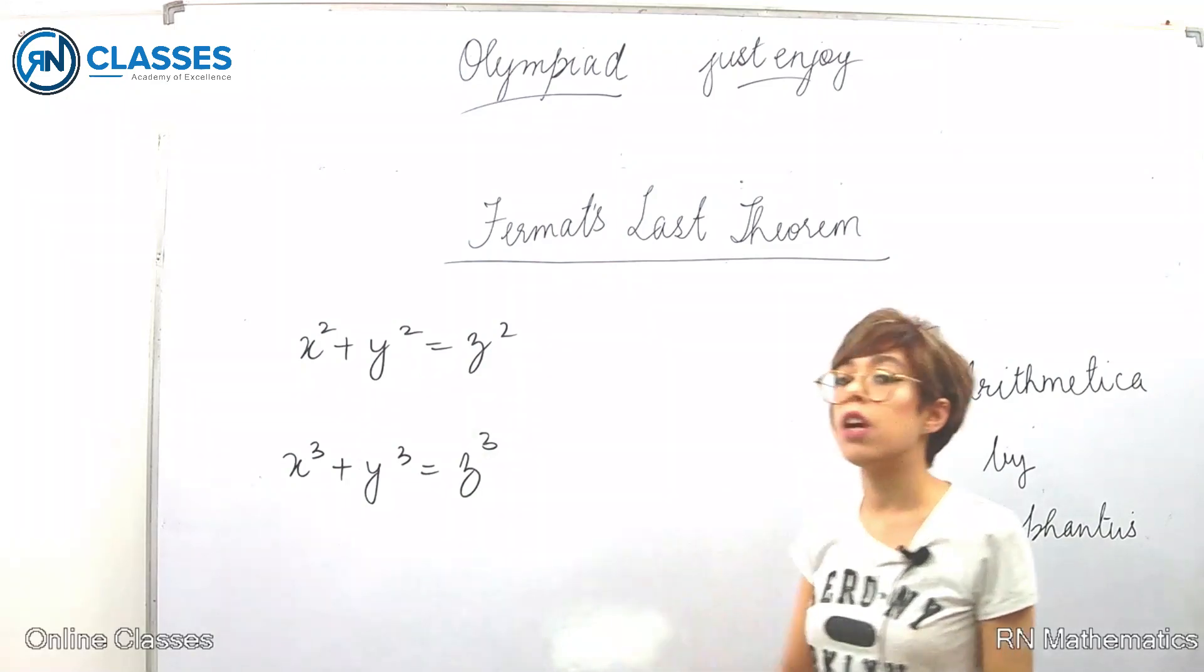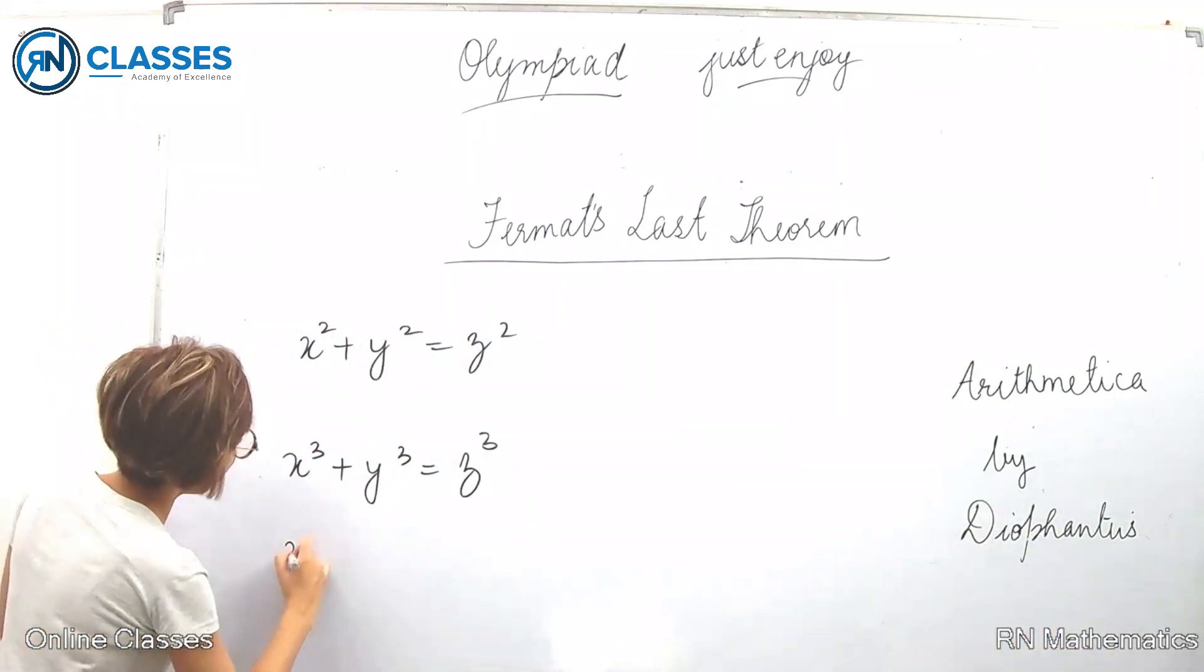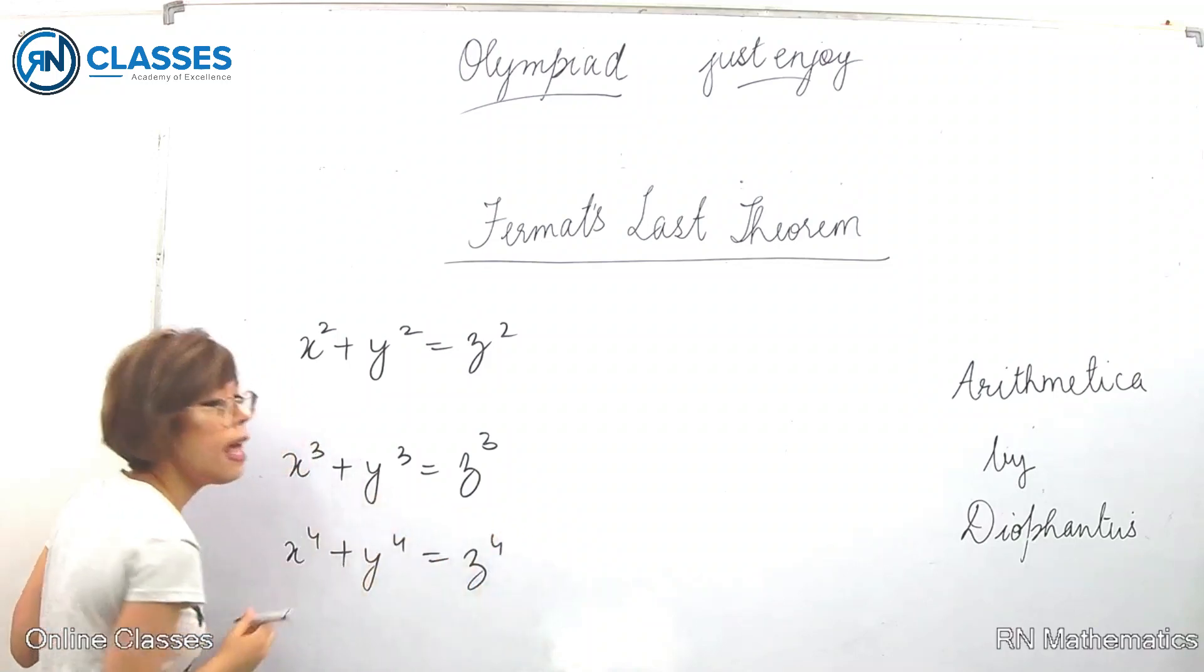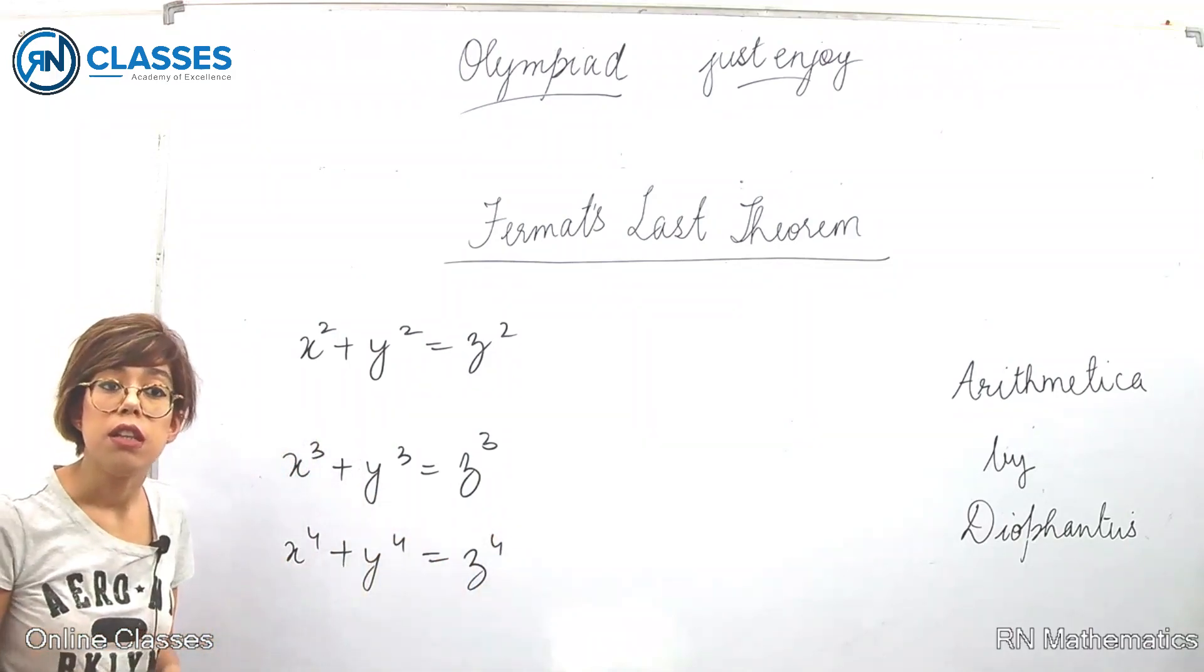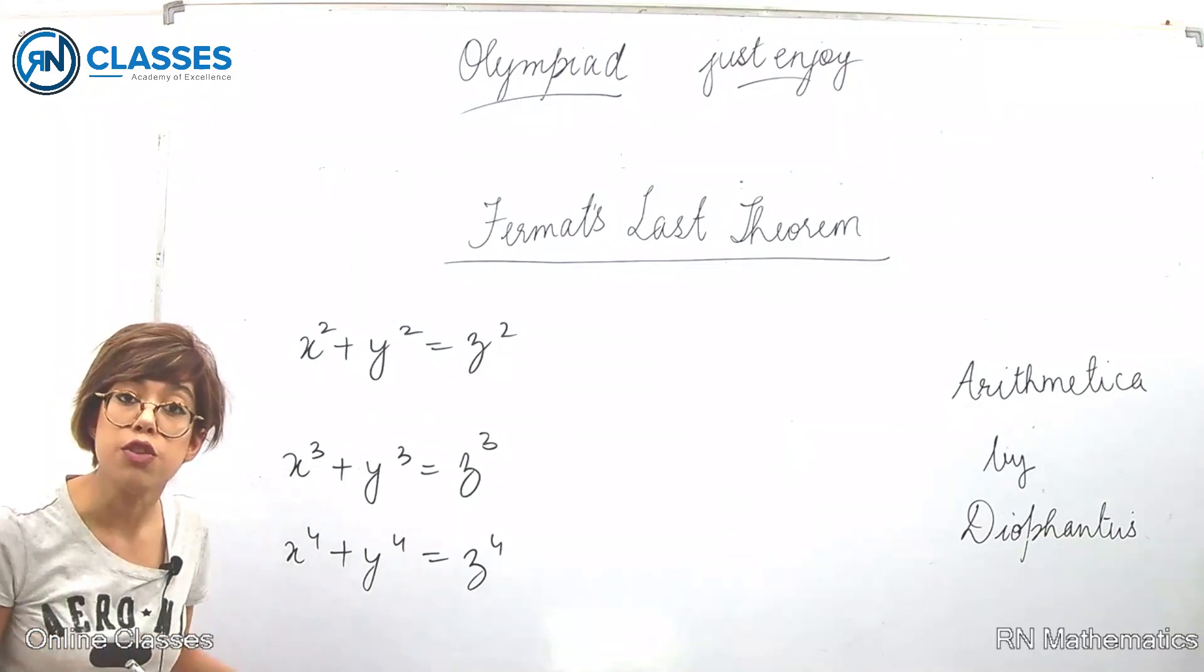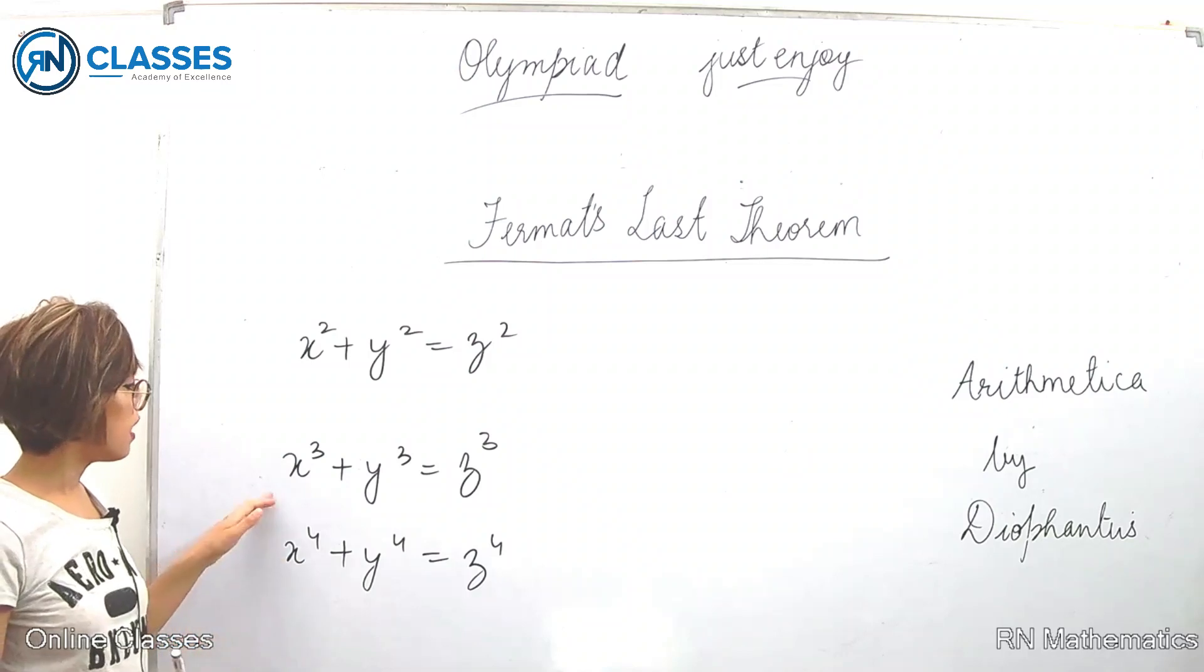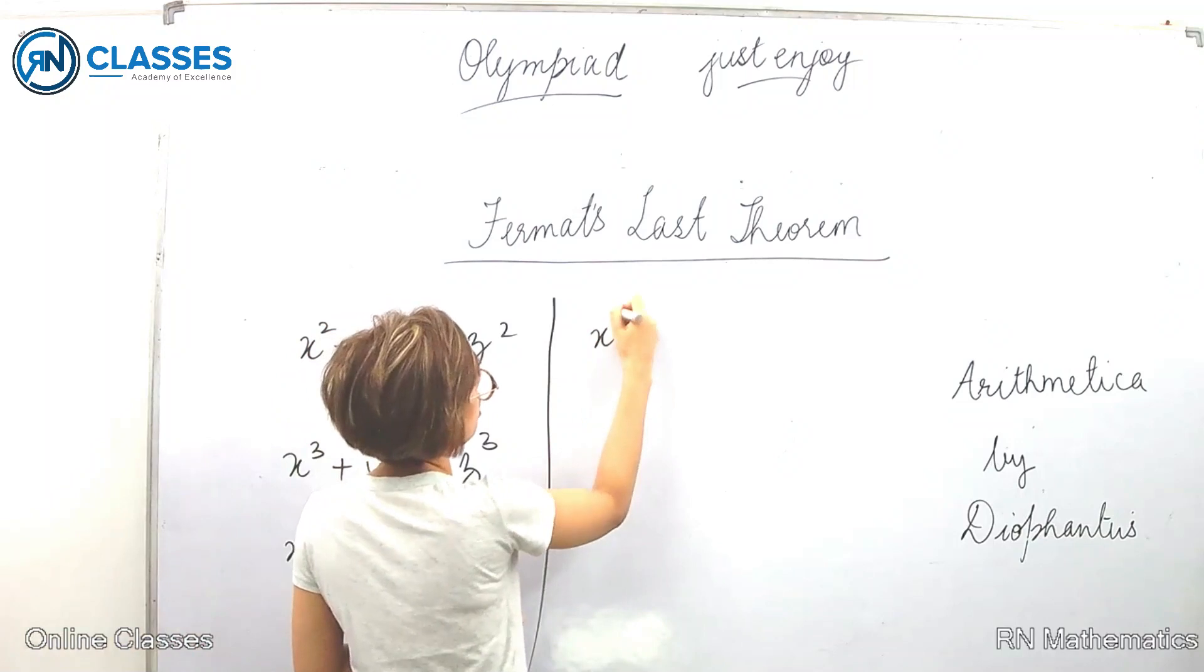Here there are infinite solutions. What has changed? Now here there is no solution. He thought about x⁴ + y⁴ = z⁴. Again, he was perplexed. There is no solution for this equation. Then he thought about this equation: x^n + y^n = z^n.